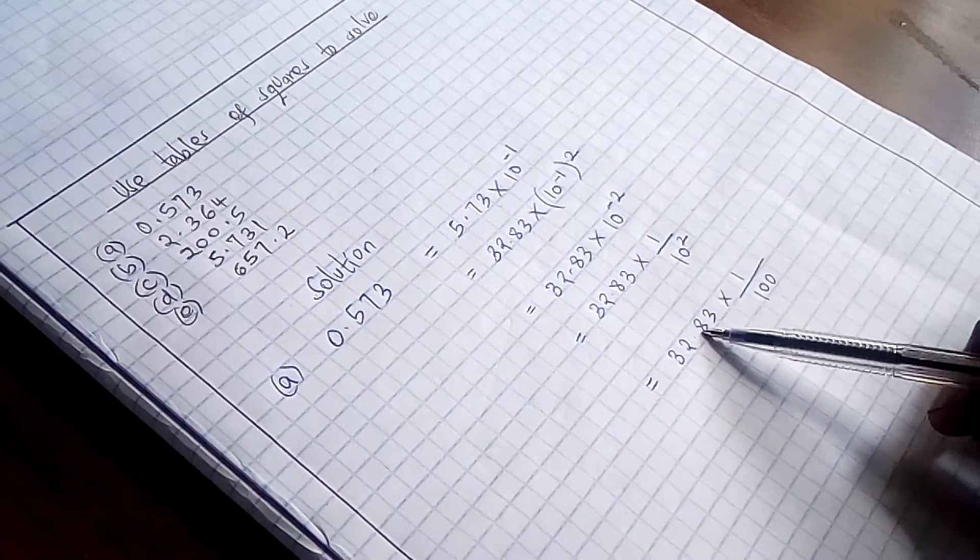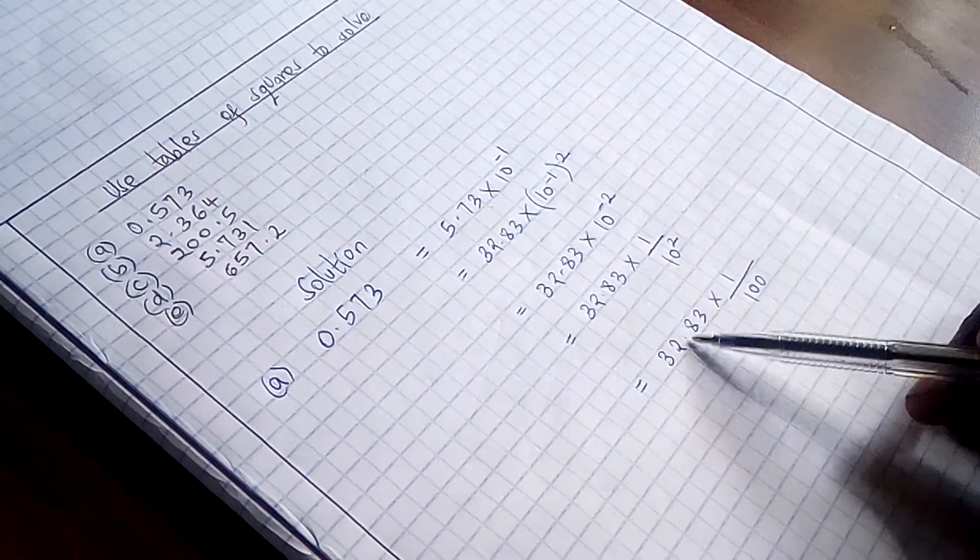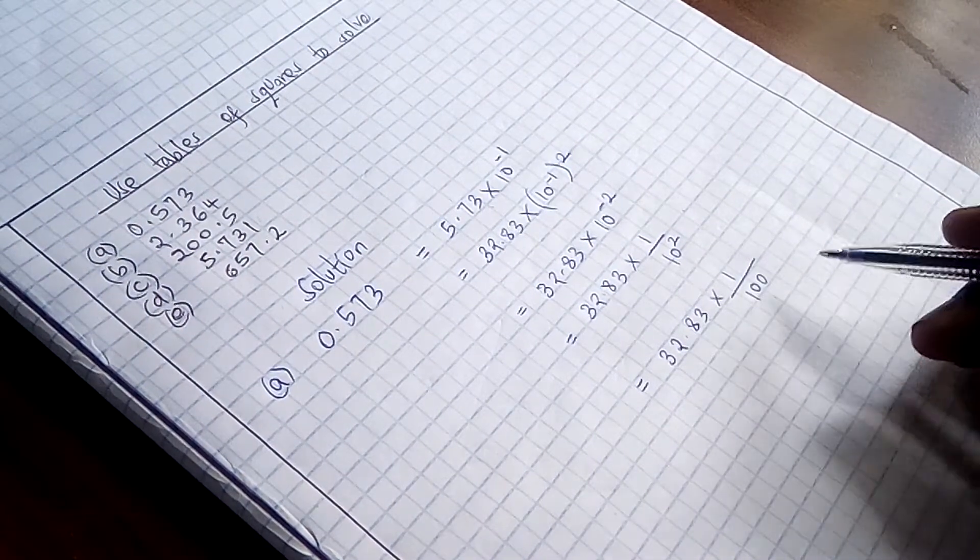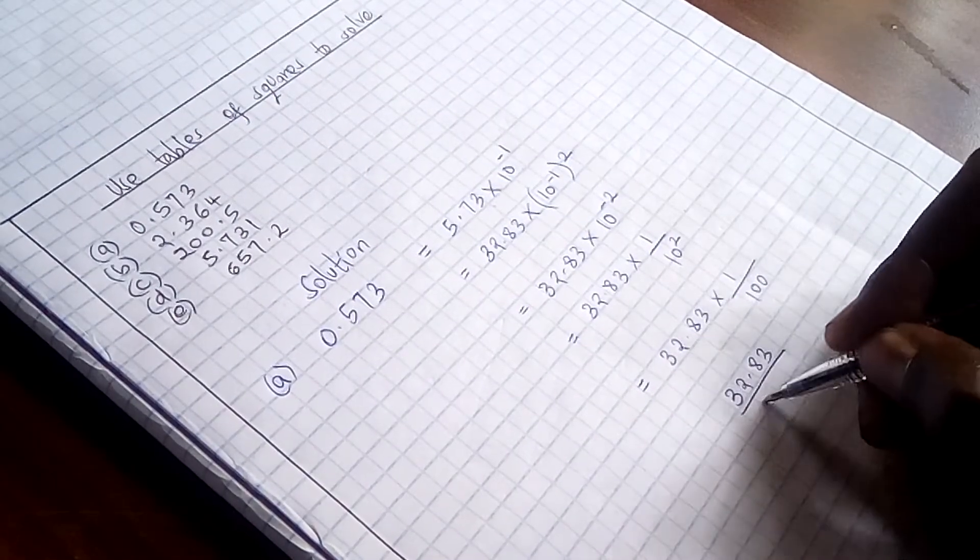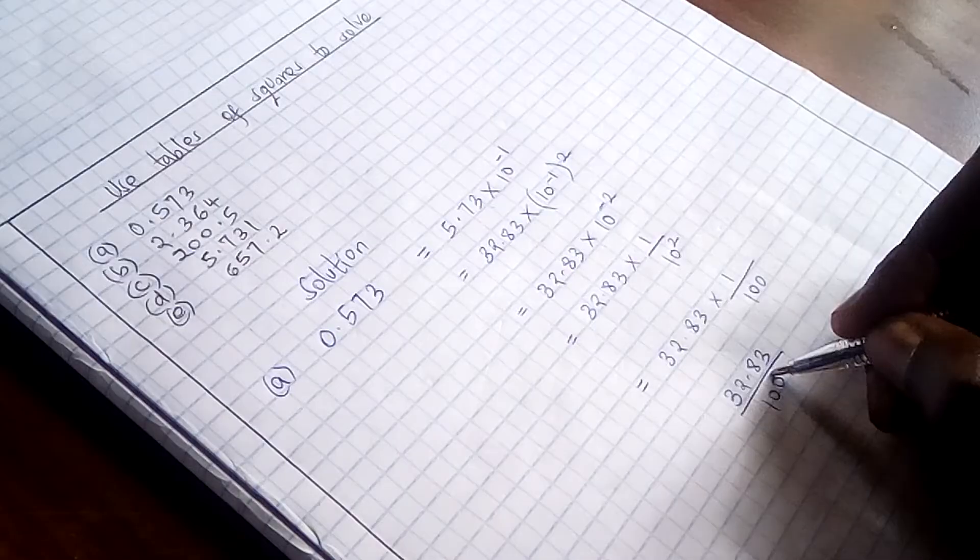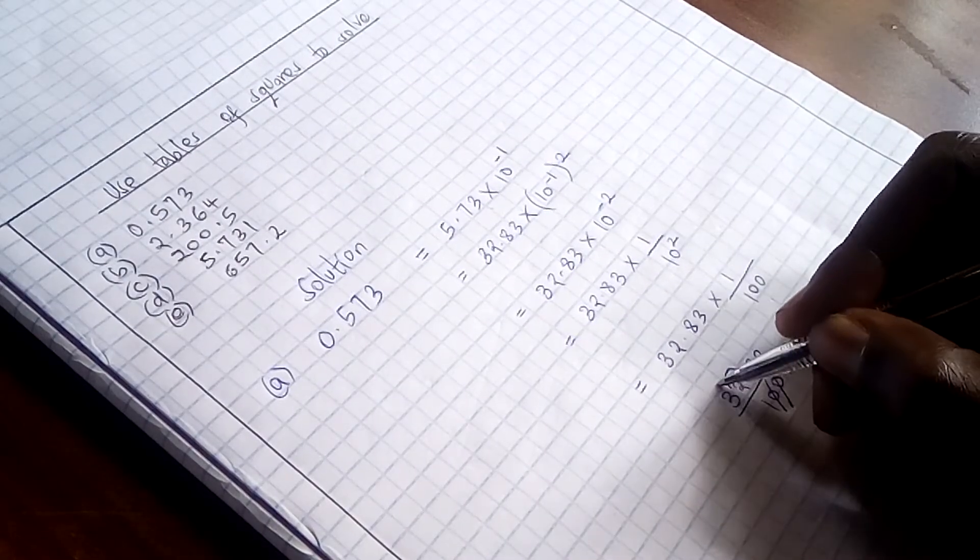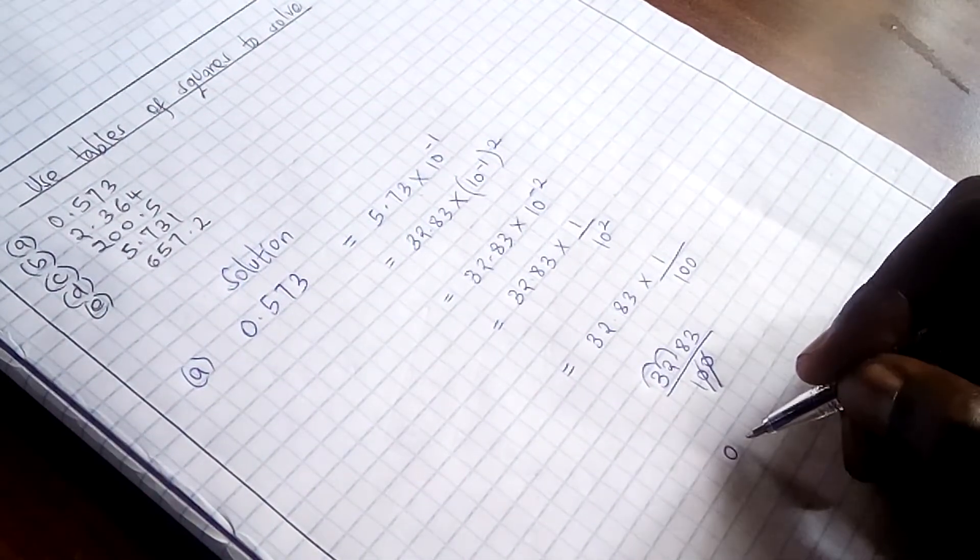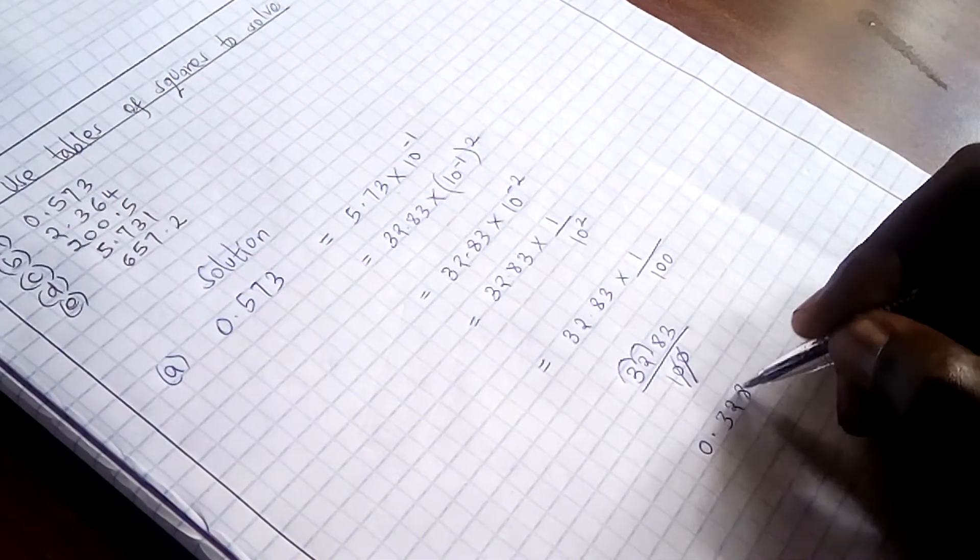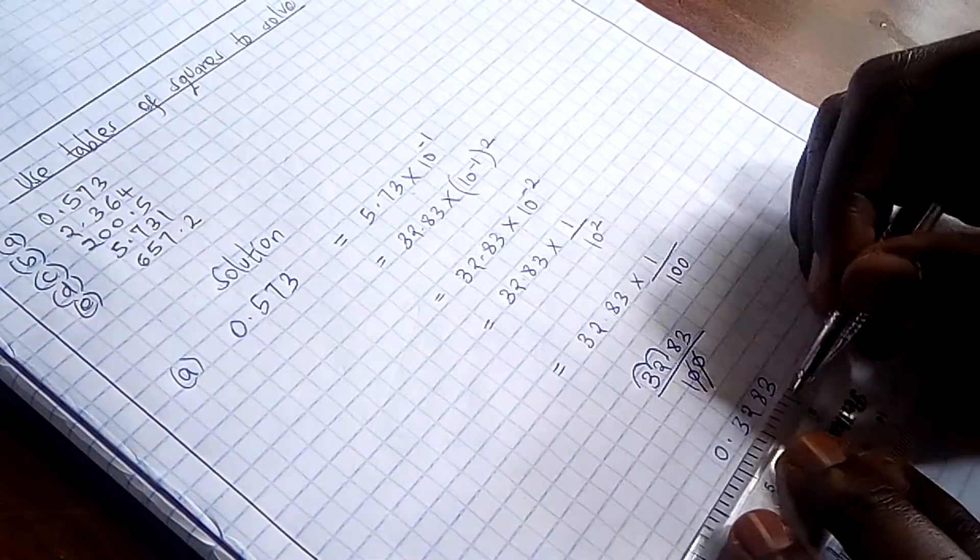So if we take this times 1 divided by 100, it is just like having 32.83 divided by 100. So this first zero will put the decimal here, the second zero will have us get our decimal there. So we have 0.3283, and that becomes our solution.